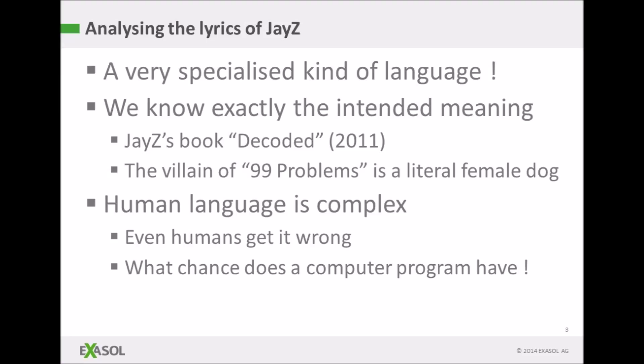One of the good things about this is that it is very messy language — it's not the Queen's English and it isn't in a convenient format. The other good thing is that we actually know the intended meaning, because we have his book Decoded, which actually tells you, for example, that the villain of '99 Problems' is a literal female dog.